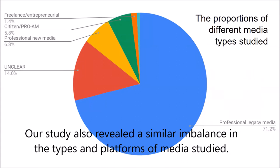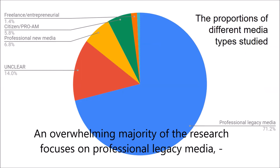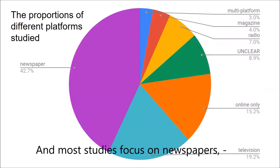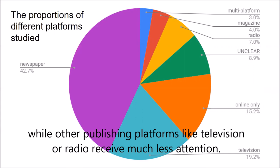Our study also revealed a similar imbalance in the types and platforms of media studied. An overwhelming majority of the research focuses on professional legacy media instead of, for example, citizen journalism. And most studies focus on newspapers, while other publishing platforms like television or radio receive much less attention.